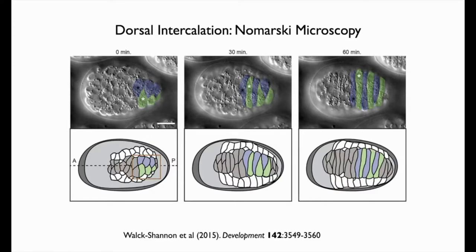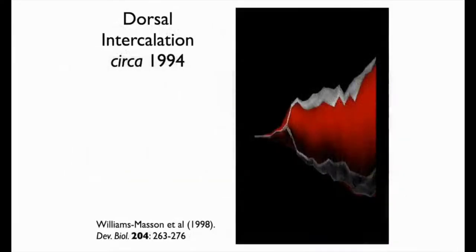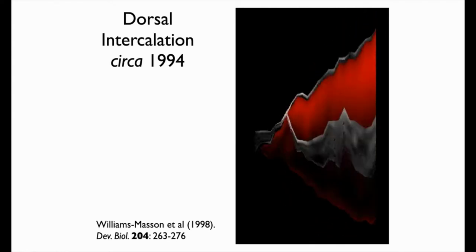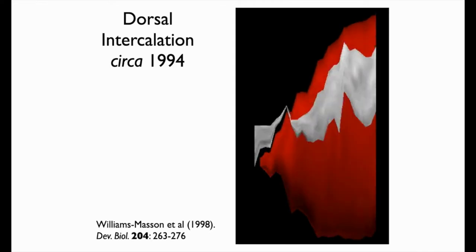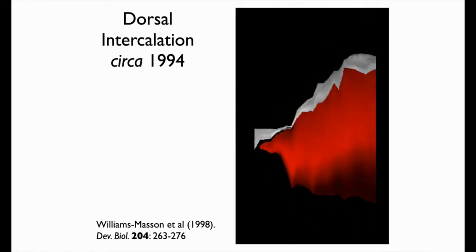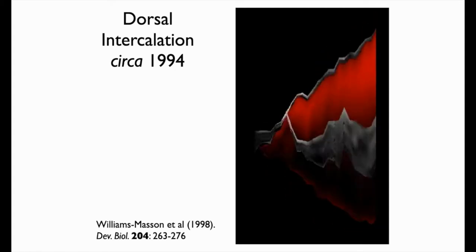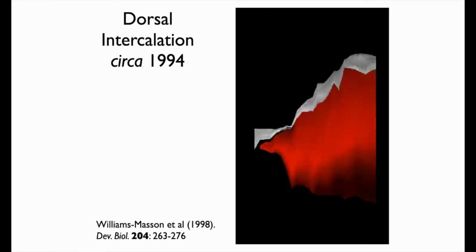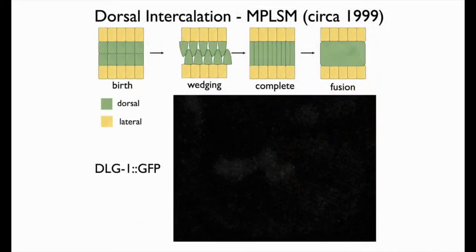We published some work many years ago on dorsal intercalation using transmission electron microscopy. This is a cell serially reconstructed from TEM micrographs — the gray here is an epithelial junction, and the red shows the tip of a cell poking its nose under the junctions of a contralateral cell. So these cells are hybrid cells — they're epithelial and yet they also have to be protrusively active.